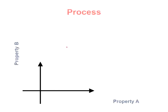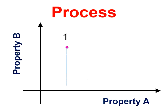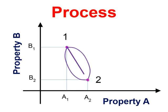Any change that a system undergoes from one equilibrium state to another is called a process, and the series of states through which a system passes during a process is called the path of the process. A line representing the states of system during its change is known as process.